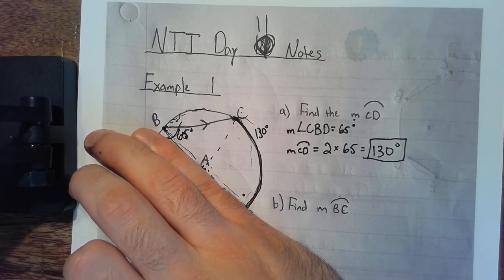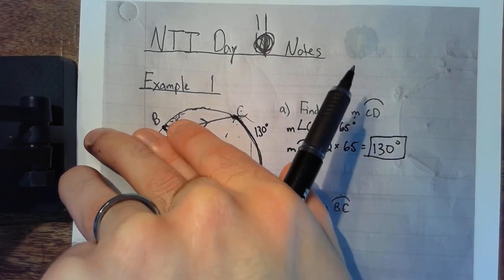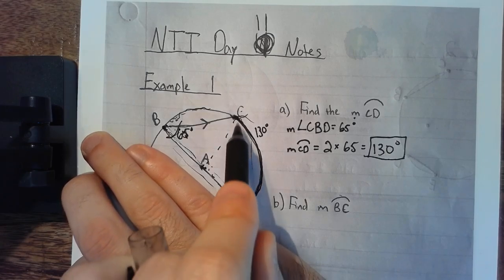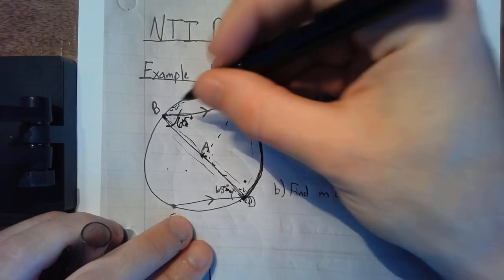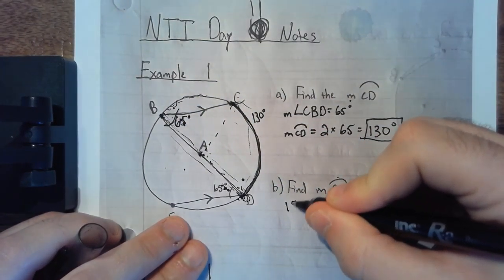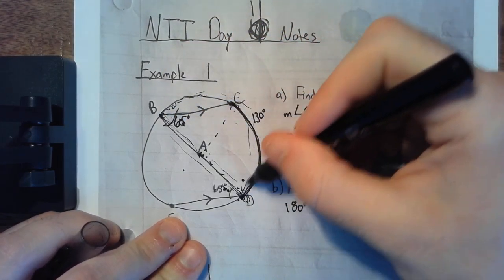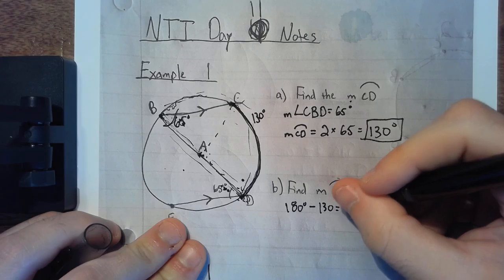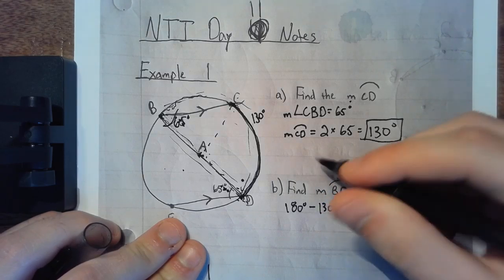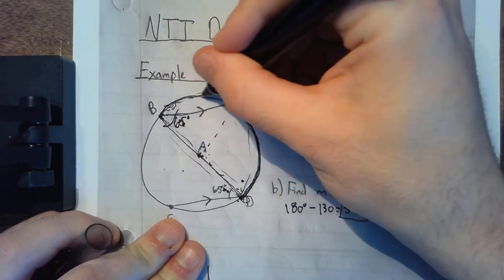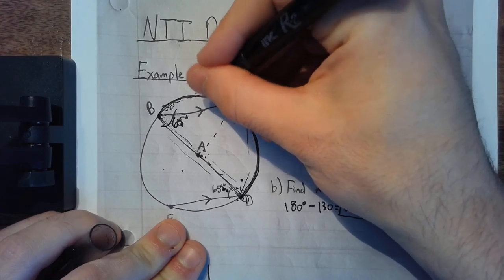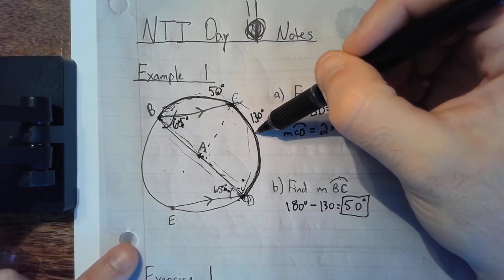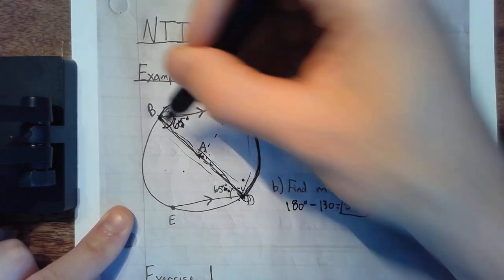Half of the circle is 180 degrees. To find the measure of arc BC, I take 180 degrees minus arc DC, which leaves me with arc BC. So it's 180 degrees minus 130 degrees, which equals 50 degrees. The measure of arc BC is 50 degrees. That makes sense because 50 plus 130 is 180, and from B to D is half the circle, which is 180 degrees.